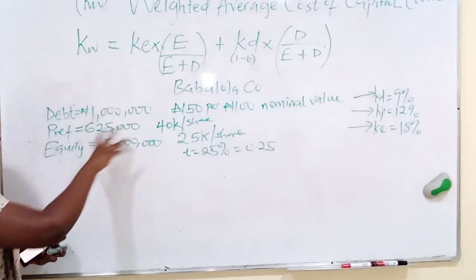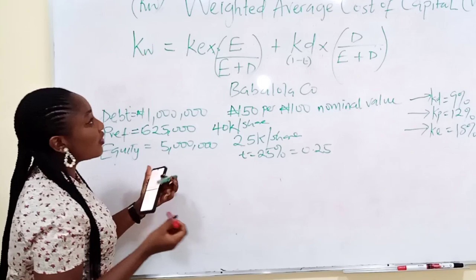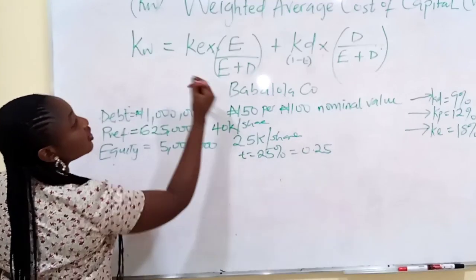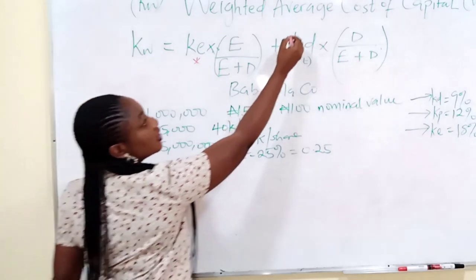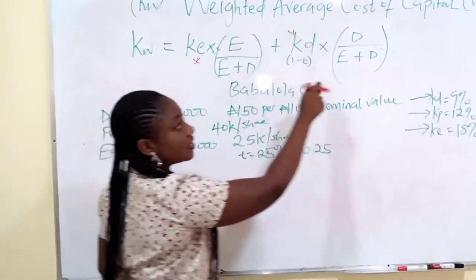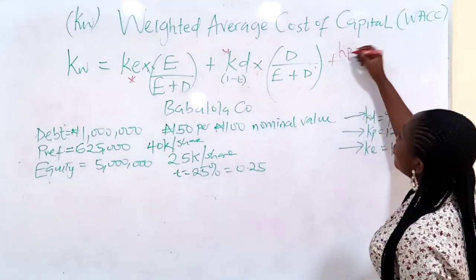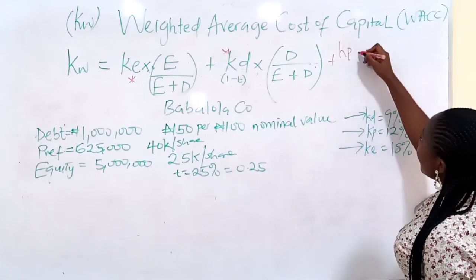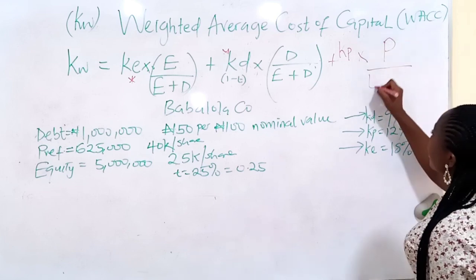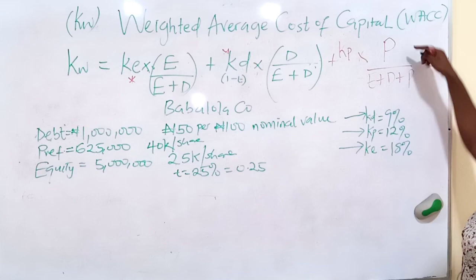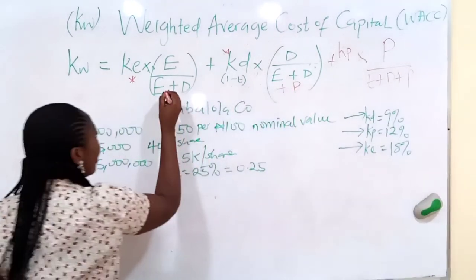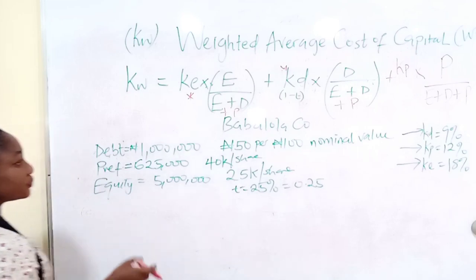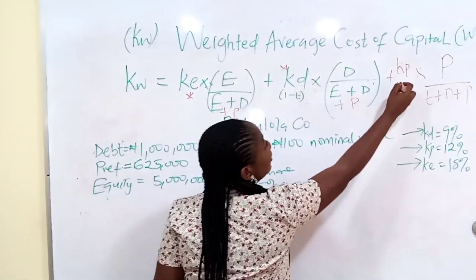What should come to your mind first is the formula. Start ticking out what you have in the formula and what you don't have. You have KE, you have KP, you have KD. Because the formula usually includes only KE and KD, you need to add KP. So it becomes: KE times E over E plus D plus P, plus KD after tax times D over E plus D plus P, plus KP times P over E plus D plus P. We already have all our costs.